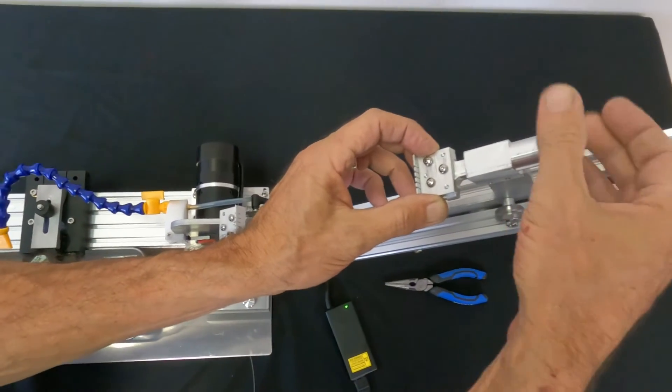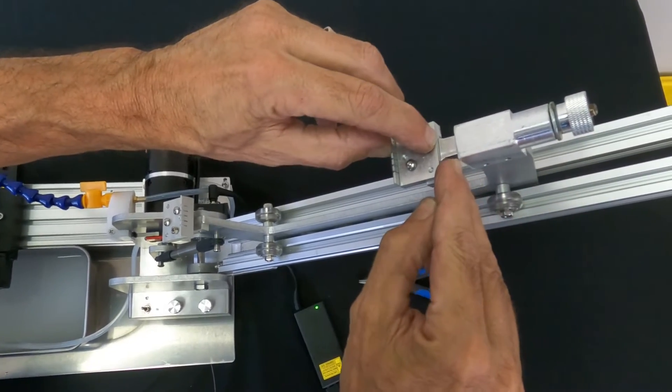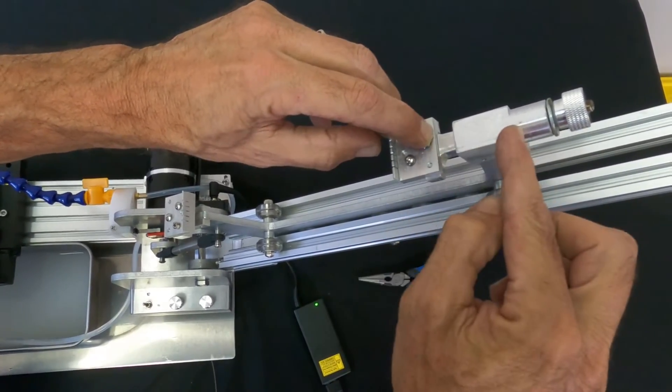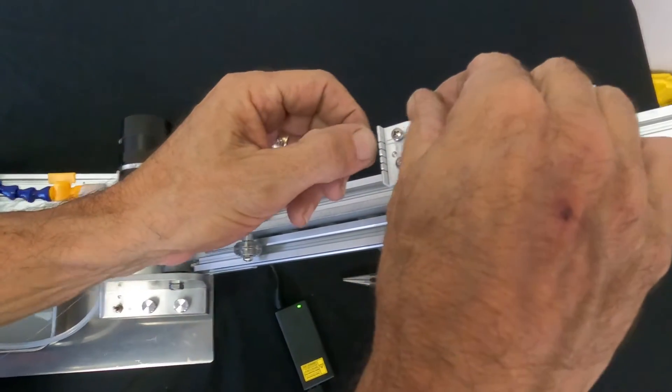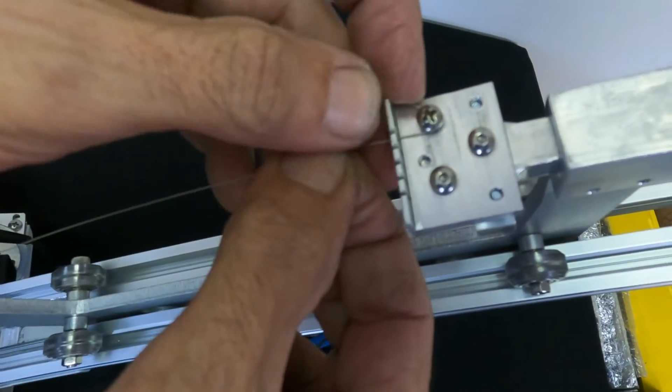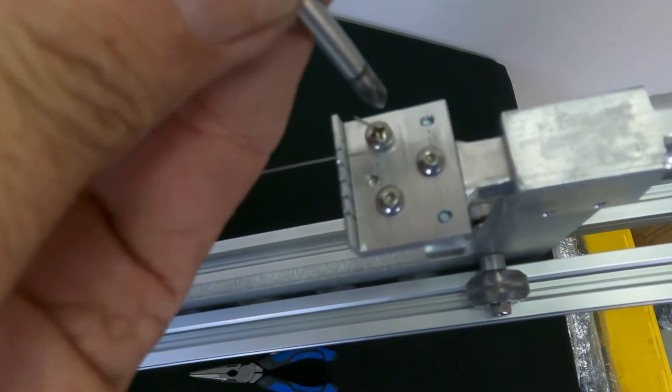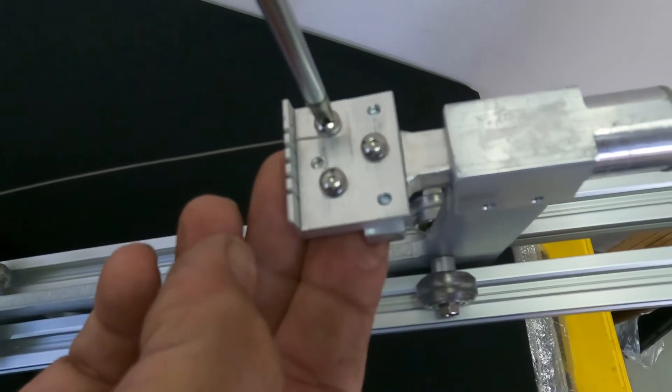Start by adjusting the tensioner with about a half of an inch gap. This leaves you enough adjustment so you can pull the wire tight. Take your hook and slide it under the first screw and tighten it down with the screwdriver, just hand tight.